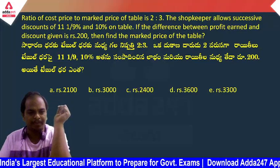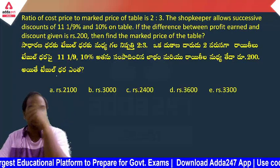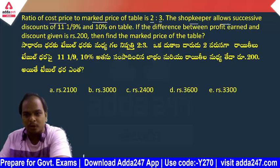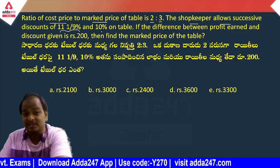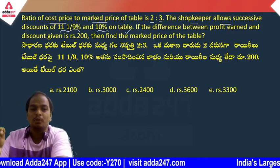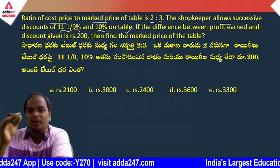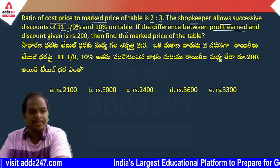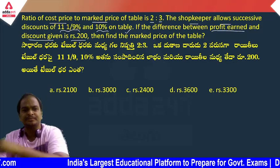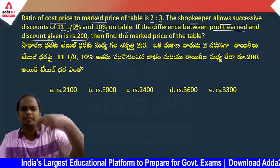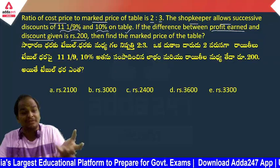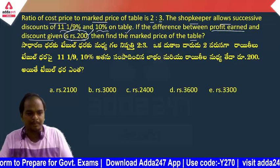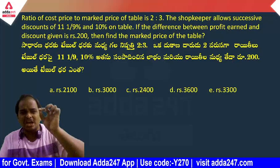First question: the ratio of cost price to market price of a table is 2:3. The shopkeeper allows successive discounts of 11 1/9 percentage and 10 percentage on the table. If the difference between the profit earned and the discount given is 200 rupees, find the market price of the table.